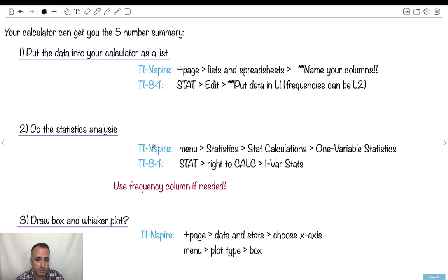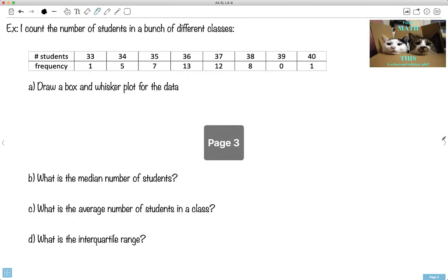Then you do the stats analysis. So in the TI-Inspire, you press menu and go stats and do one-variable statistics. Don't forget to use a frequency column if you needed to. Same for the 84. You go stat, you go right to calc, and you do one-var stats. Again, use the frequency if you need to. And then TI-Inspire can actually draw the box and whisker plot if you want to. I don't think it's that important to draw it on your calculator. You have to be able to draw it by hand. Let's do an example then.